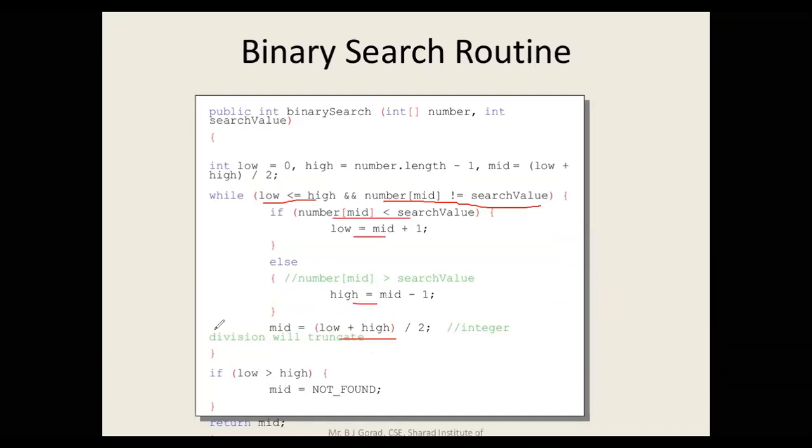After the while loop is done, if the low index is greater than high index, that means we haven't been able to find the value and our search algorithm has failed. We couldn't find the item. Sometimes when you search something on Google and it returns that this item could not be found, that means you have searched all of it and couldn't find the item.